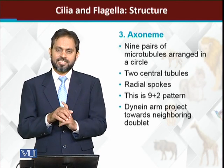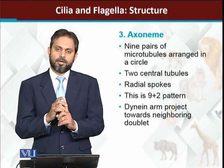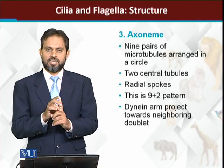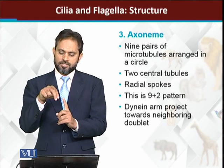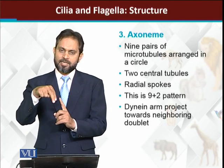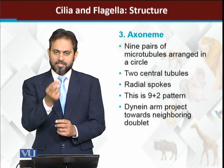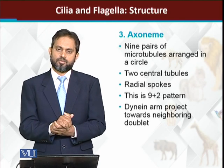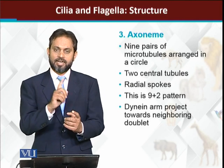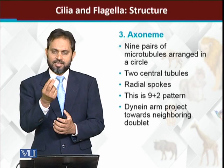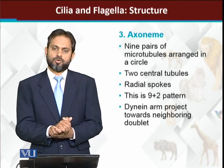The axoneme is the main part of cilia and flagella, and it is made up of microtubules. Inside cilia and flagella, there are nine doublets of microtubules arranged in a circle - that is, nine double sets forming a complete circle. In addition to these nine outer doublets, there are also two microtubules present in the center. So the axoneme consists of a circle of nine double microtubule doublets plus a central pair of two microtubules.